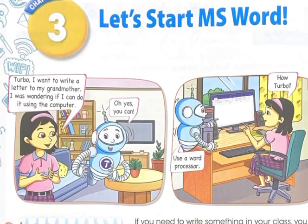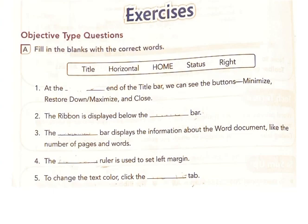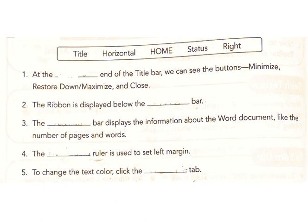Lesson 3: MS Word Exercises. Objective type questions. A: Fill in the blanks with the correct words. One: at the end of the title bar, we can see the buttons minimize, restore.